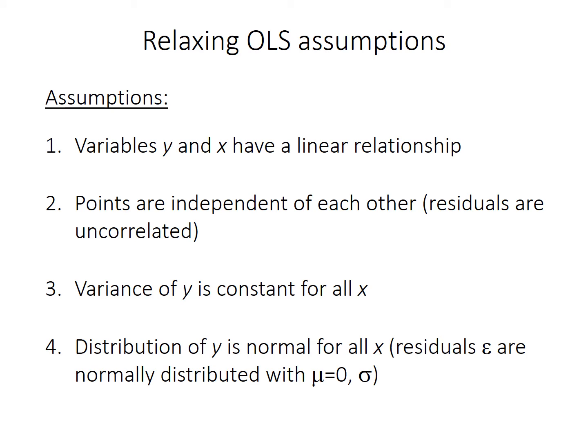I covered linear regression assumptions in a previous video, so I'm not going to go into much detail here. But we're going to focus on the second assumption: that the points must be independent of each other — in other words, that the residuals should be uncorrelated with residuals of the previous point or previous points. Generalized least squares regression is a method you can use when there is some significant correlation between residuals. This most often occurs with time series data, though GLS regression can also be used in the case of spatial correlation of the residuals and similar things.